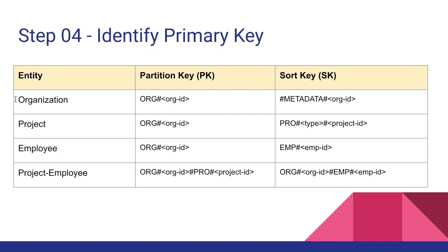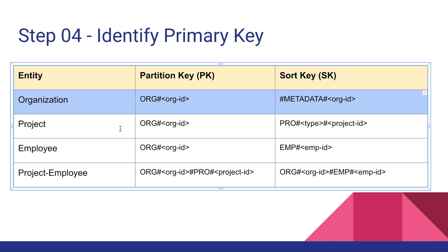Now let's focus on the organization entity. The partition key is ORG# followed by the organization ID. The sort key starts with #METADATA# followed by the organization ID. Let's look at some example queries for organization based on the access patterns identified earlier.